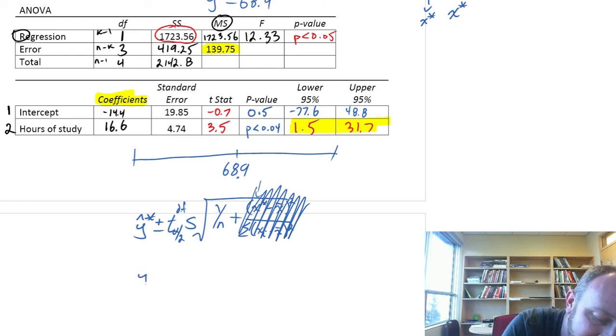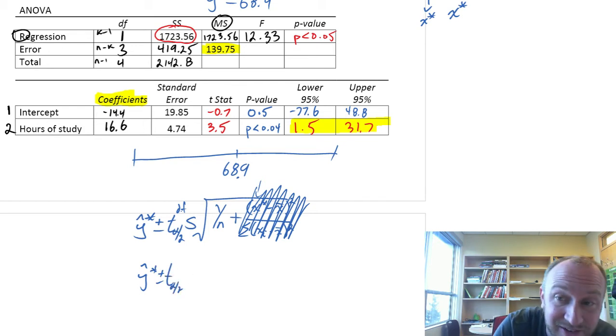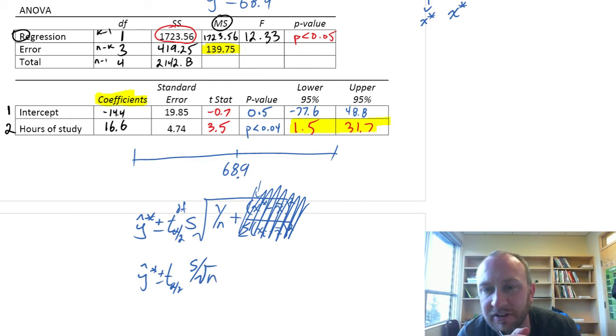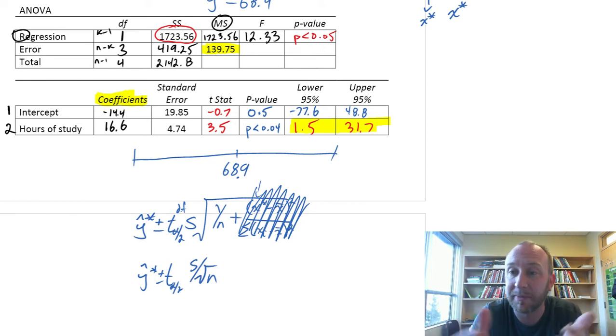And this interval estimate, plus or minus t alpha by 2, now it's going to look quite familiar. This is just the standard error of the estimate over the square root of the sample size. It looks familiar to what we saw back in chapter 9.